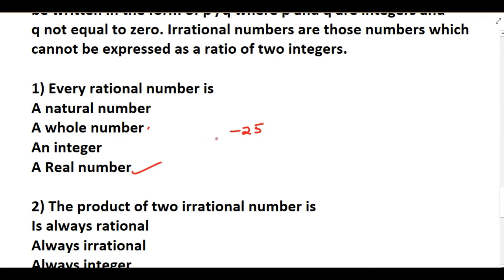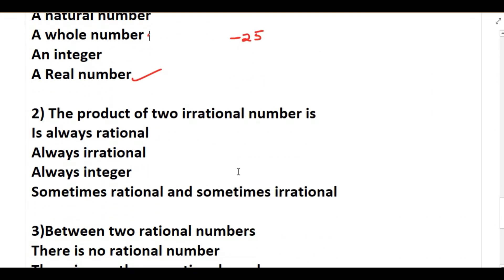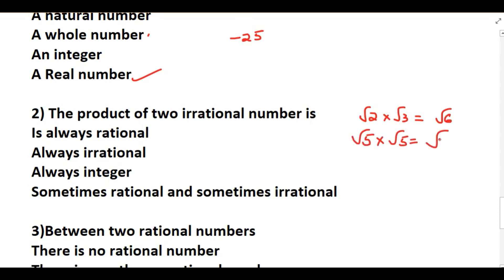Next question: the product of two irrational numbers is — always rational, always an integer, sometimes rational and sometimes irrational. The correct option is sometimes rational and sometimes irrational. For example, root 2 times root 3 gives root 6, which is irrational. But root 5 times root 5 gives root 25, which equals 5, and that is rational.